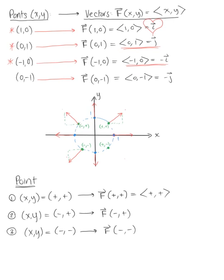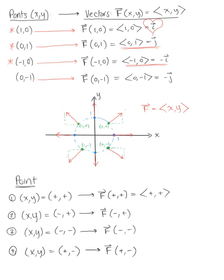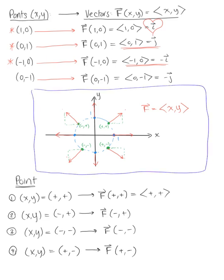For an arbitrary ordered pair in quadrant 4, x is positive and y is negative, so the vector is pointing in a positive x and negative y direction — down and to the right. Now looking at our completed graph, we've filled in all of the gaps. For a radial vector field like this, all of the vectors are pointing outward from the origin. You can incorporate additional level curves to see more vectors in the field, but they will always point outwards from the origin.